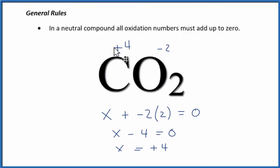That's the oxidation number on the carbon in CO2. If we add all these oxidation numbers up, we have 2 times minus 2, that's minus 4, plus 4, that gives us 0.